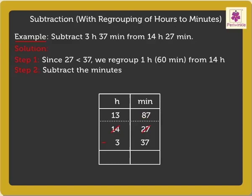87 minus 37 equals 50 minutes. Step 3: Subtract the hours. That is 13 hours minus 3 hours, which equals 10 hours. Look, we found the answer.